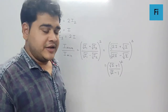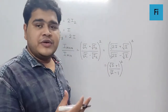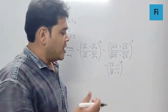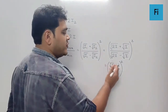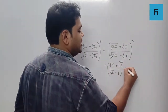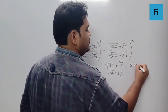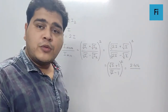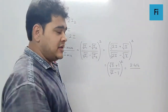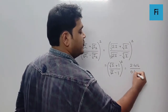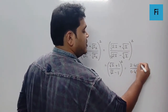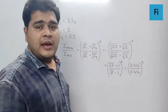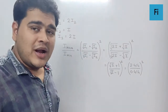Now for the calculation: √2 ≈ 1.414, so 1.414 + 1 = 2.414 in the numerator, and 1.414 − 1 = 0.414 in the denominator. We need to square the ratio 2.414 / 0.414.